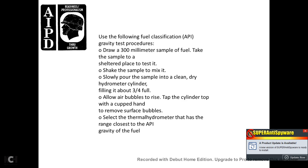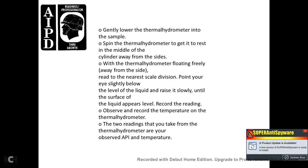API gravity test procedures: draw 300 milliliters of sample fuel. Take the sample to a sheltered place to test it. Shake the sample to mix it. Slowly pour the sample into a clean, dry hydrometer cylinder, filling it three-quarters full. Allow air bubbles to rise; tap the cylinder top with a cupped hand to remove surface bubbles. Select the thermal hydrometer with a range close to the API gravity of the fuel. Gently lower the thermal hydrometer into the sample and spin it to let it come to rest in the middle. Wait for the hydrometer to float freely away from the side. Point your eye slightly below the liquid level, then raise slowly until the surface appears level and read the nearest scale division. Record the reading and the temperature on the thermal hydrometer. The two readings from the thermal hydrometer are the observed API gravity and the temperature.